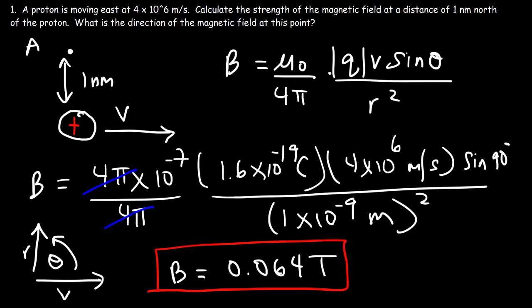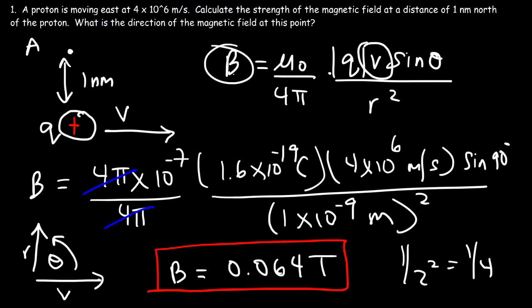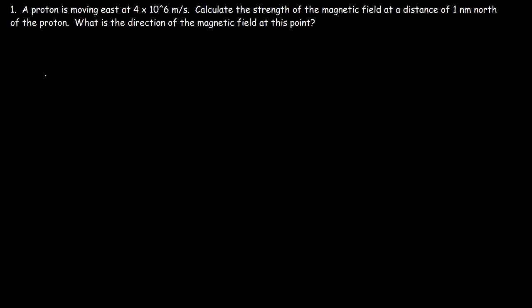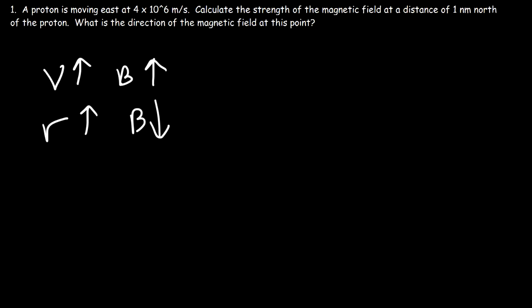The strength of the magnetic field increases greatly as you get close to a charged particle — it's inversely related to r squared. If you double the distance, 1 over 2 squared is 1 fourth, so the magnetic field will decrease by a factor of 4. If you triple the distance, it decreases by a factor of 9. If you double the speed of the proton, the magnetic field will double. Only moving charged particles can generate a magnetic field; a stationary charged particle will not. As you increase the distance, the magnetic field decreases.